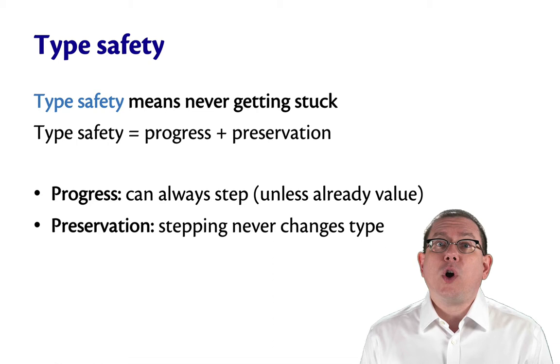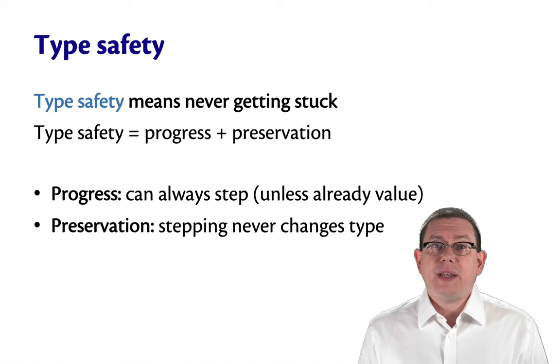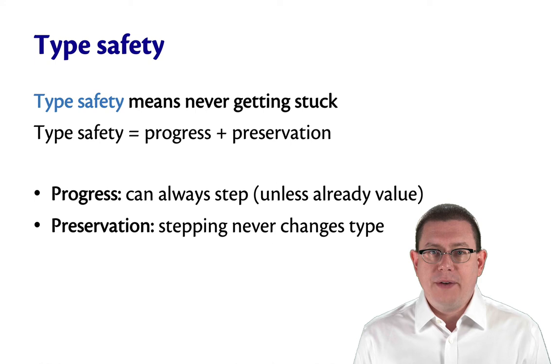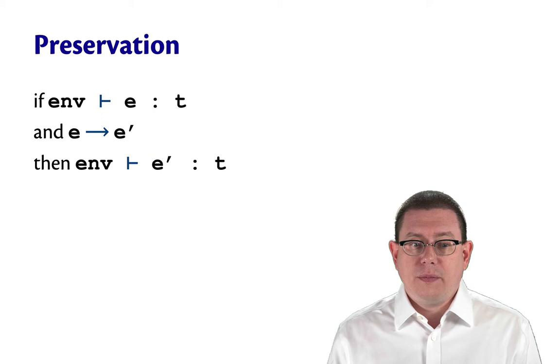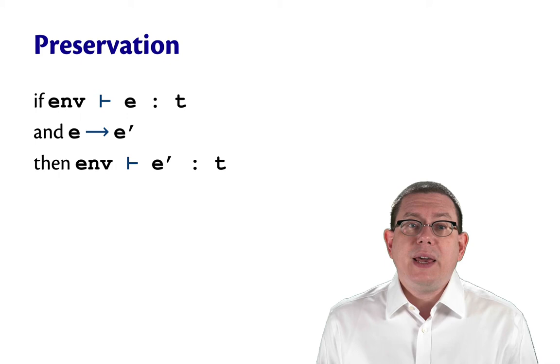Progress says that an expression can always take a step unless it's already a value. Preservation says that taking a step never changes the type of an expression. So to state those a little more carefully, preservation says that if an environment shows that an expression has type T,